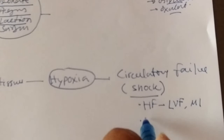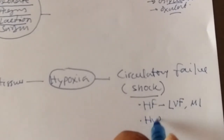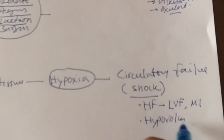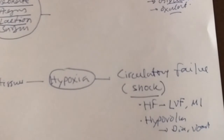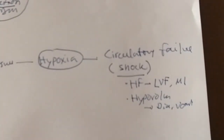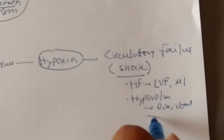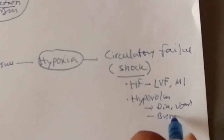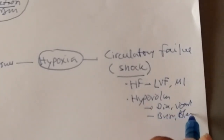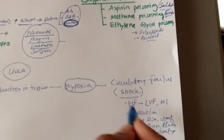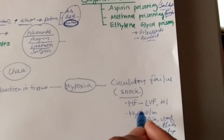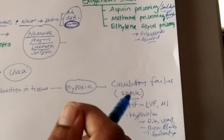Hypovolemic shock — from diarrhea, vomiting, burns, bleeding, or excessive sweating — can also cause tissue hypoxia. Any type of shock in any degree can lead to hypoxia with subsequent lactic acidosis.